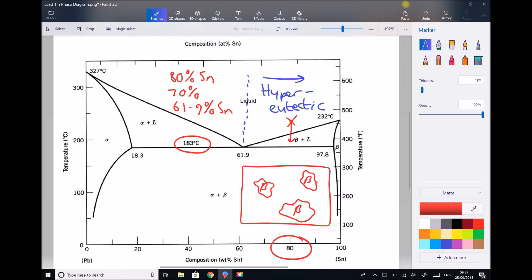Okay, so until we reach a composition of 61.9% tin, each of these regions is going to continue to increase in size. Once we hit 61.9%, that's our eutectic composition. And that's the point that both our alpha and our beta go directly from liquid to solid phase, as we spoke about here.